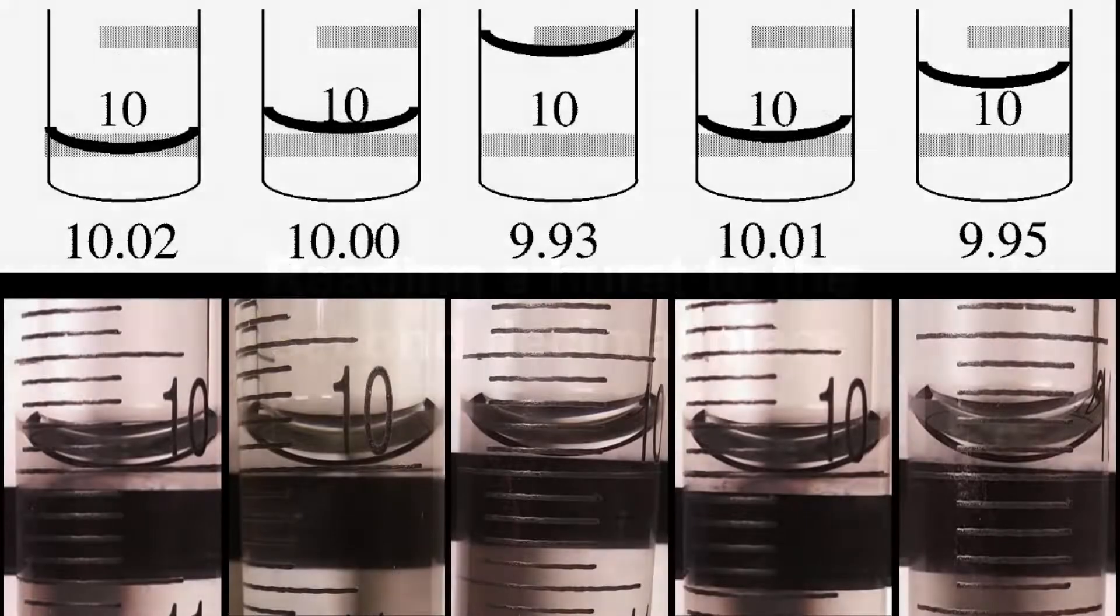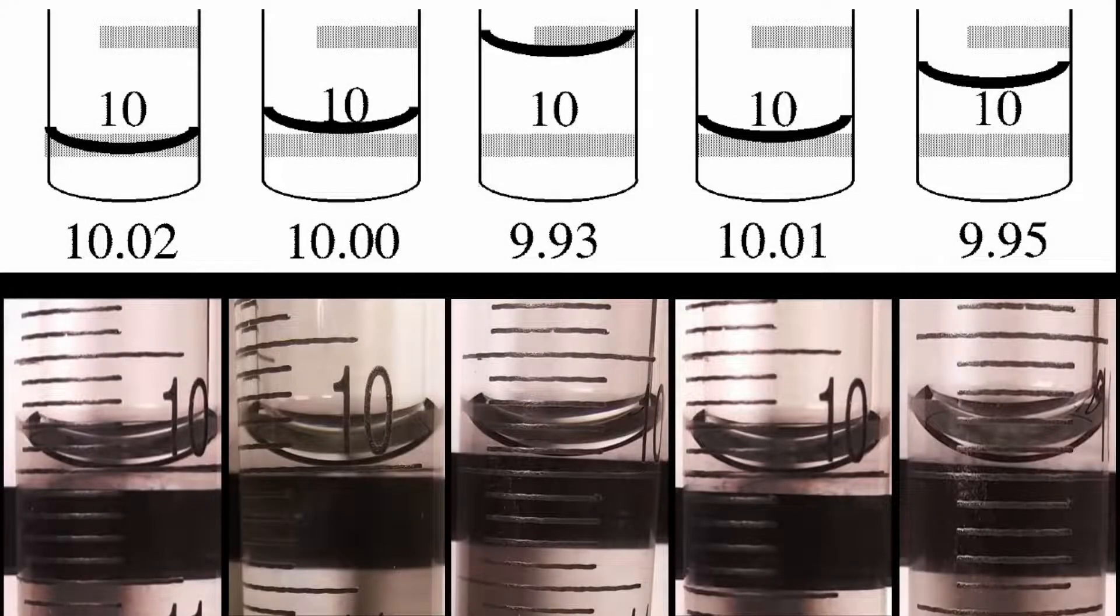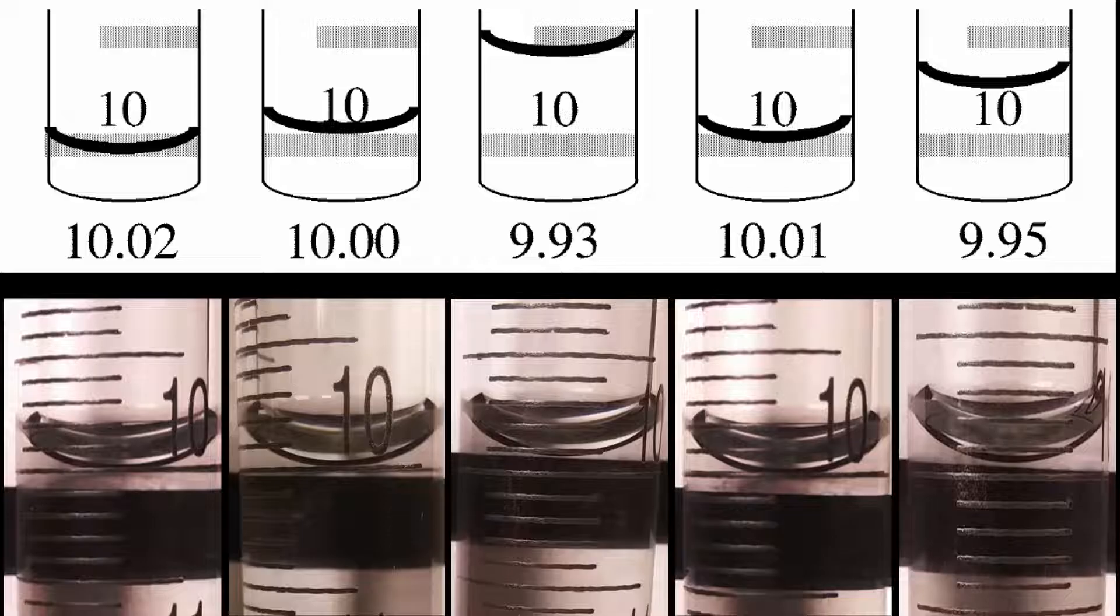Reading a burette to the second decimal place. To accurately read a burette to two decimal places it is important to be able to estimate the meniscus position between two burette markings. Here are five examples that we will go through to demonstrate how accurate readings are taken.